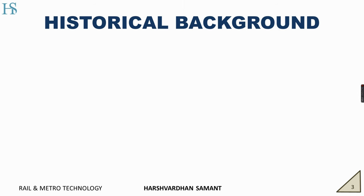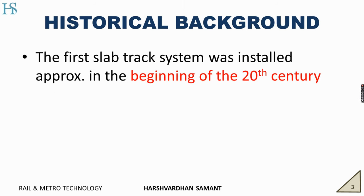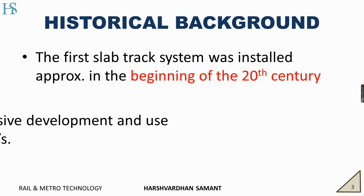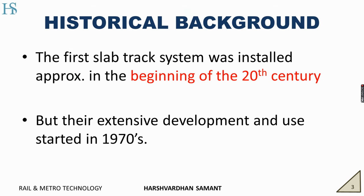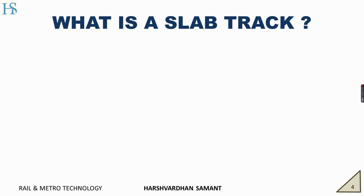Talking about historical background, the first Slab Track was installed at the beginning of the 20th century. But the extensive development as we see today started only after the 1970s. In 1972, RHEDA and Shinkansen were installed for the first time.